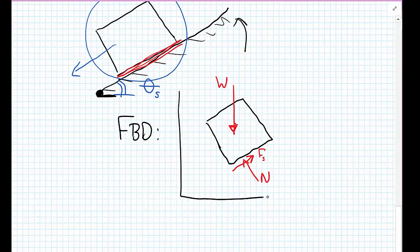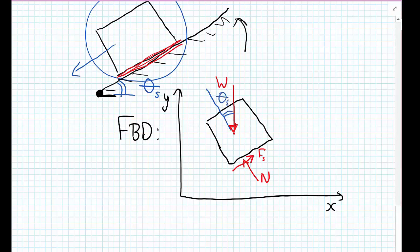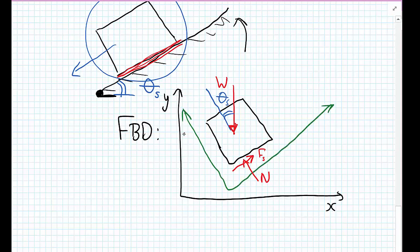We've drawn the forces in a global X and Y coordinate system, where the angle is theta_s. For analysis, it's more convenient to define a new rotated set of axes — X-dash and Y-dash — so that Fs acts parallel to the X-dash direction and the normal force N acts parallel to the Y-dash direction. We can then write our equilibrium equations in this new coordinate system.